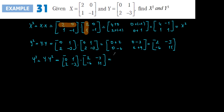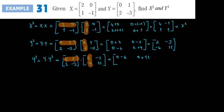Completing Y cubed by multiplying [[0,1],[2,-3]] times [[2,-3],[-6,11]]: first row: 0×2+1×(-6)=-6, 0×(-3)+1×11=11; second row: 2×2+(-3)×(-6)=4+18=22, 2×(-3)+(-3)×11=-6-33=-39. Therefore Y cubed equals [[-6,11],[22,-39]].